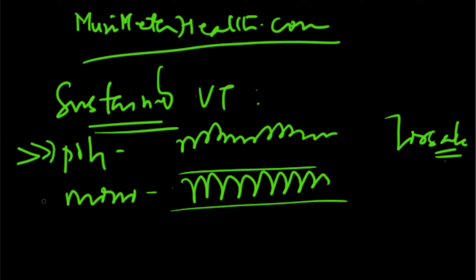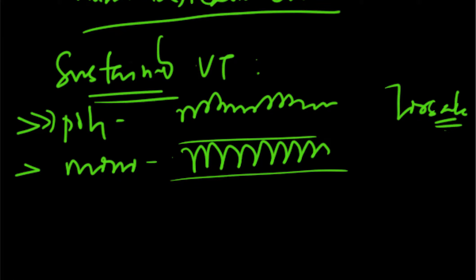Now polymorphic is more dangerous. Remember that. This is very, very prognostically bad. Monomorphic is also bad because sustained VT anyway, but monomorphic is relatively not as bad as polymorphic. Just remember that. So that's one important distinction.